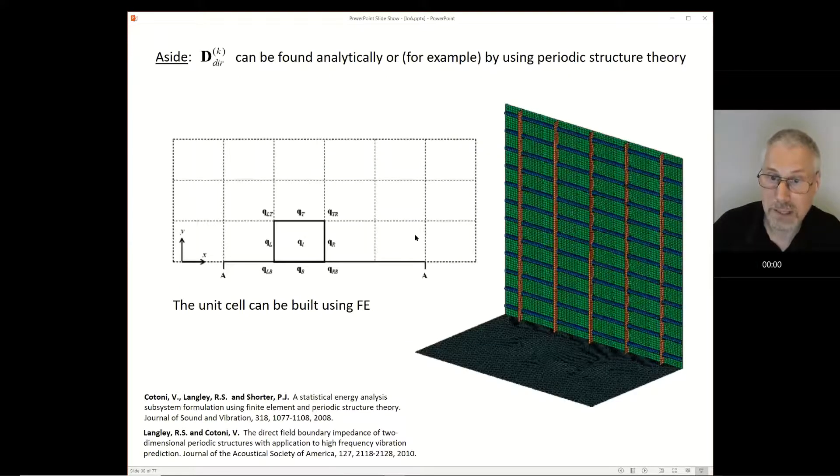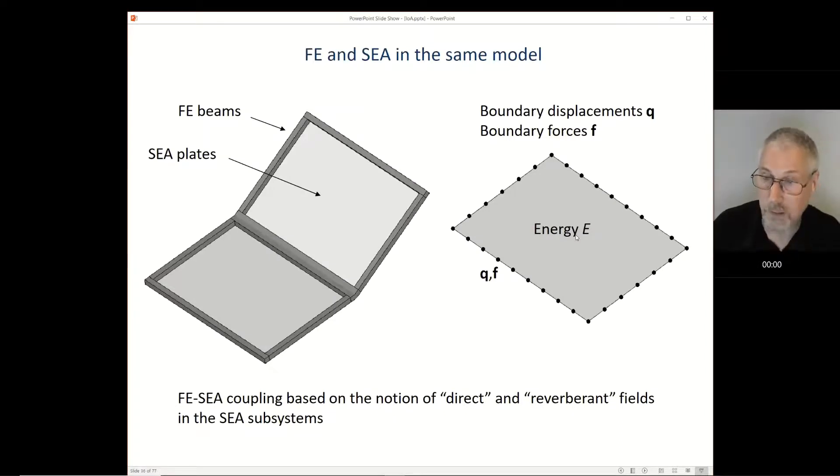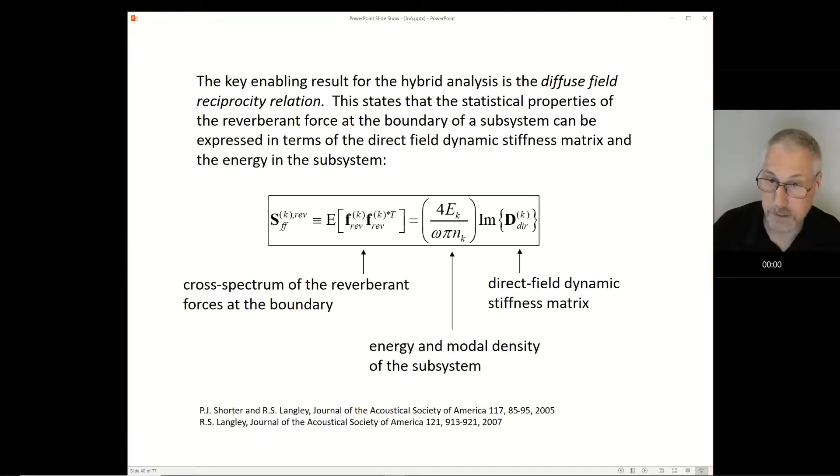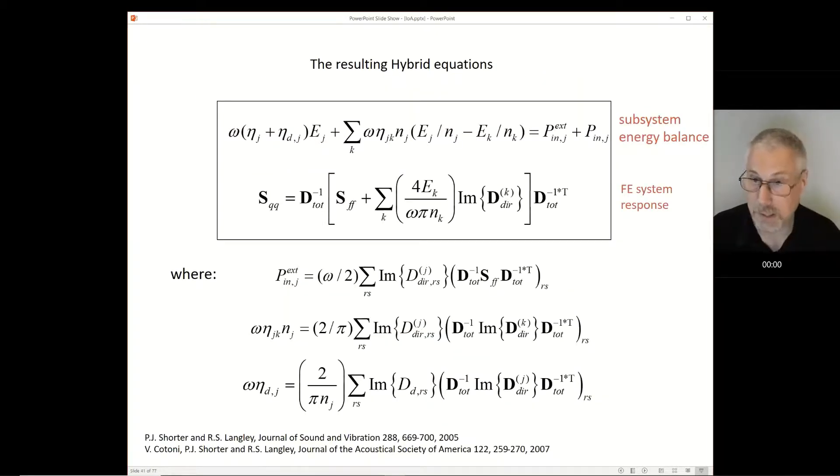So what does that do? It enables us to say that if we have a certain amount of energy in this panel, we can work out the way that energy is going to force the FE structure. We then have enough information to develop a set of global equations for our structure. It turns out that the set of global equations look like this. For the SEA subsystems, we get a set of SEA equations. For the FE part of the structure, we get what's essentially a set of FE equations, but they're squared up so that we get an equation for the cross spectrum of the FE response. These are non-iterative. We just solve the equations and the building blocks are the FE model of the FE part of the structure, which we know, and the direct field matrix, which we know. So given those things, we get all the other parameters in the model, and we call that the hybrid method.